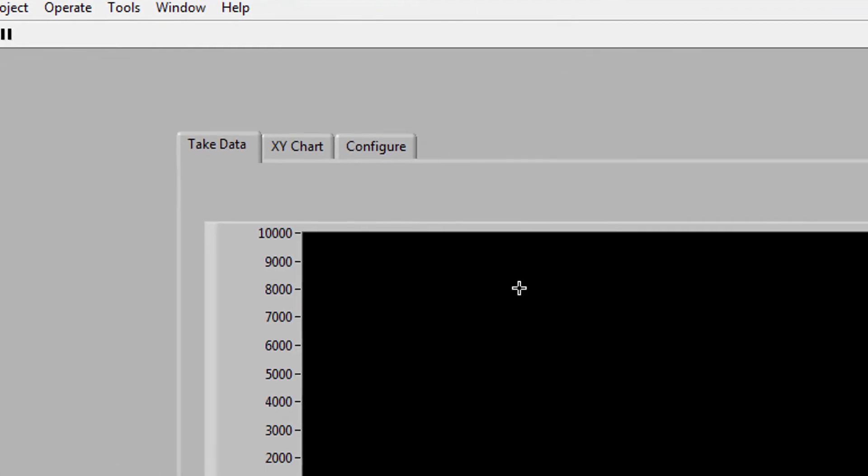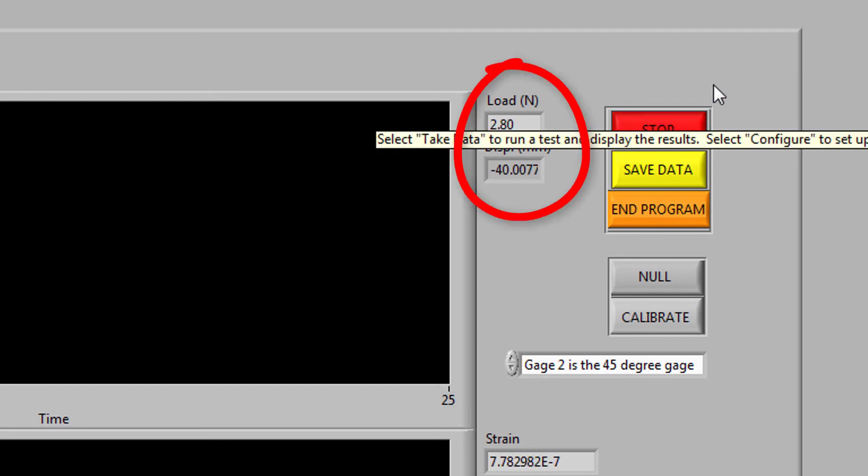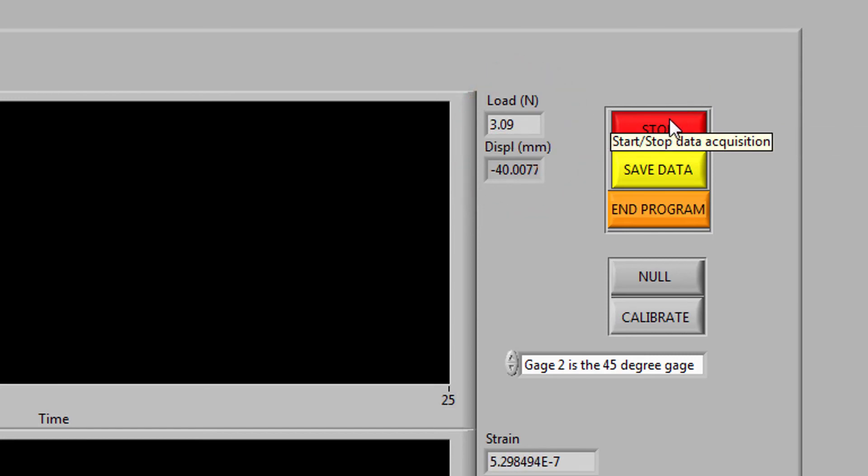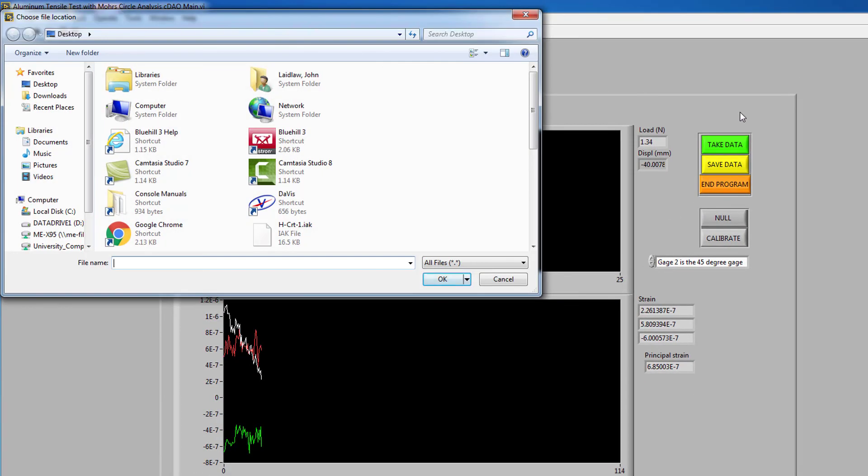Click on the green Take Data button and note the average value for both load and position. When done, click the Stop button and cancel the prompt to save the data.